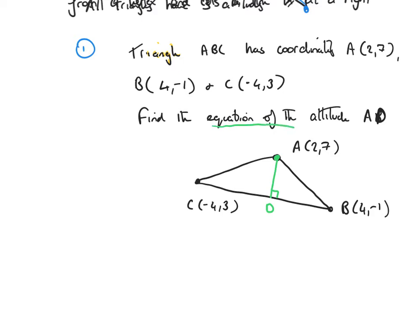We need to find the equation of this altitude. Since an altitude is a straight line, I need a point and a gradient. Because the altitude comes from vertex A, I can use A as my point — that's (2, 7). Now I need to find the gradient of the altitude. To do that I first find the gradient of line BC, then use the perpendicular relationship to get the gradient of the altitude.